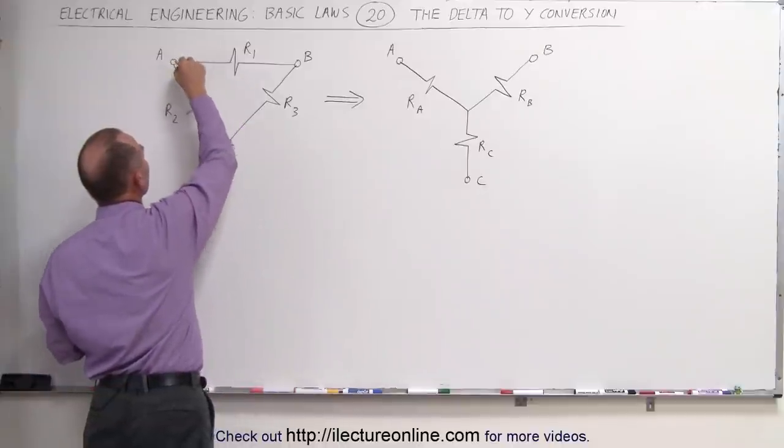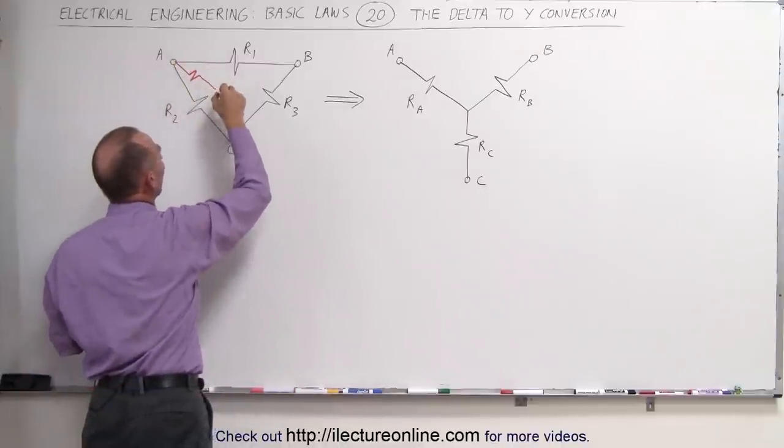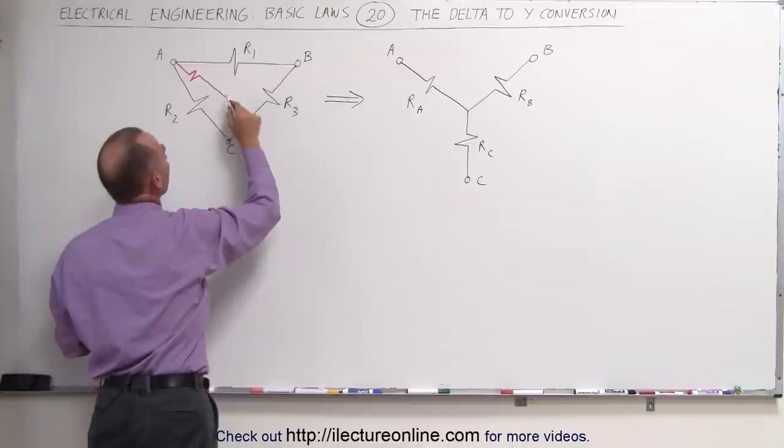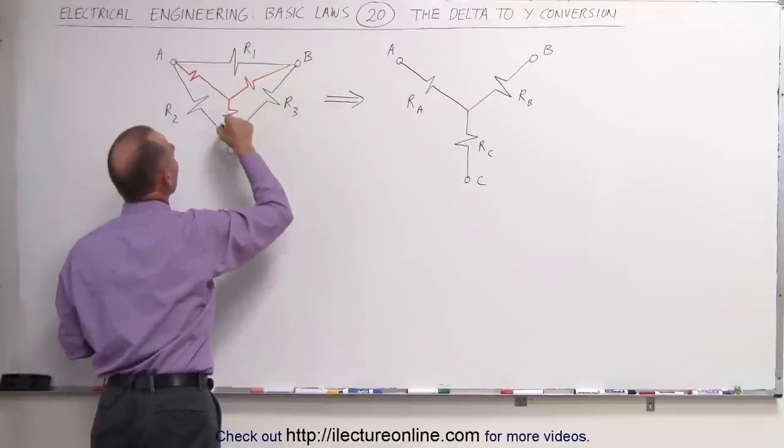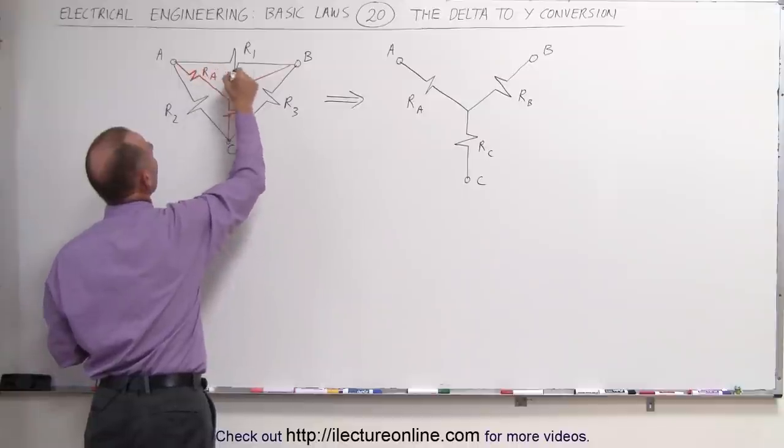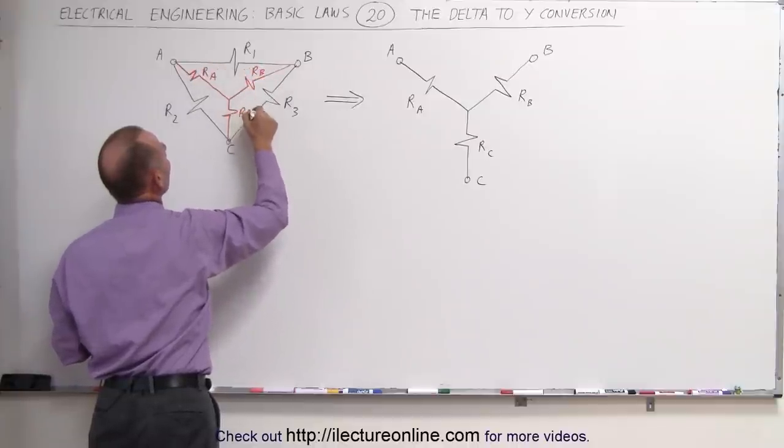So if we draw this in here like that, there's my R sub A, there's my R sub B, and there's my R sub C. So this is R sub A, R sub B, and R sub C.